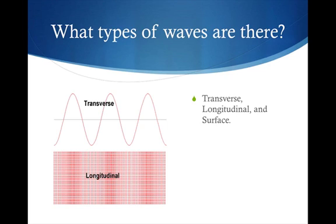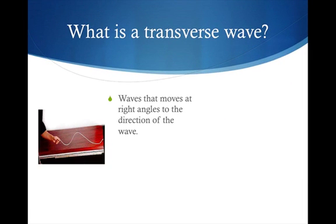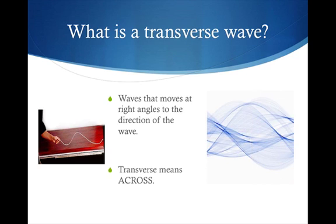A transverse wave is one that moves at right angles to the direction of the wave. Transverse means across. So if the direction of the wave is going this way, but the motion of the wave is up and down, that's right angles. So that's a transverse wave.